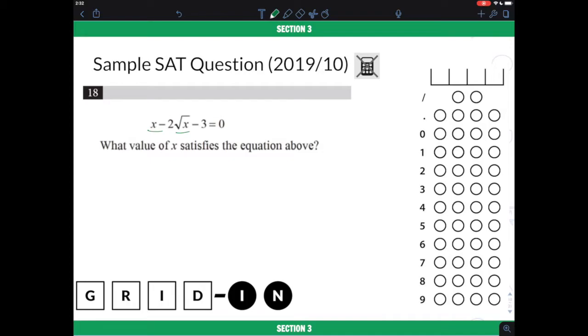So instead, what we would do is, let's go ahead and isolate the square root x on one side, and let's move everything else to the other side. So what we can do is to add the 2 square root x onto the right-hand side. So we will have x minus 3 is equal to 2 square root x.